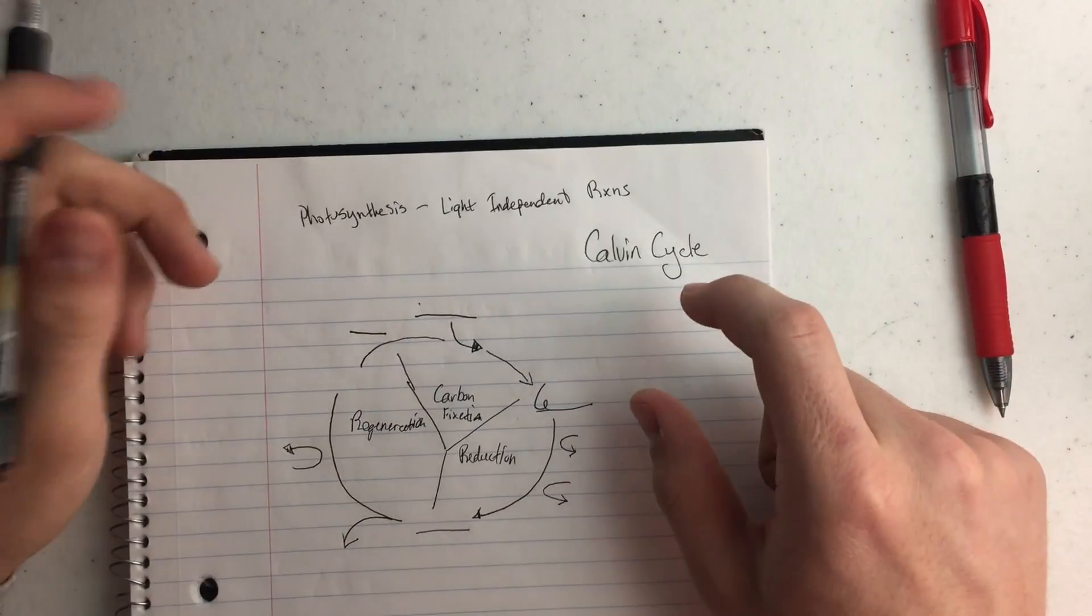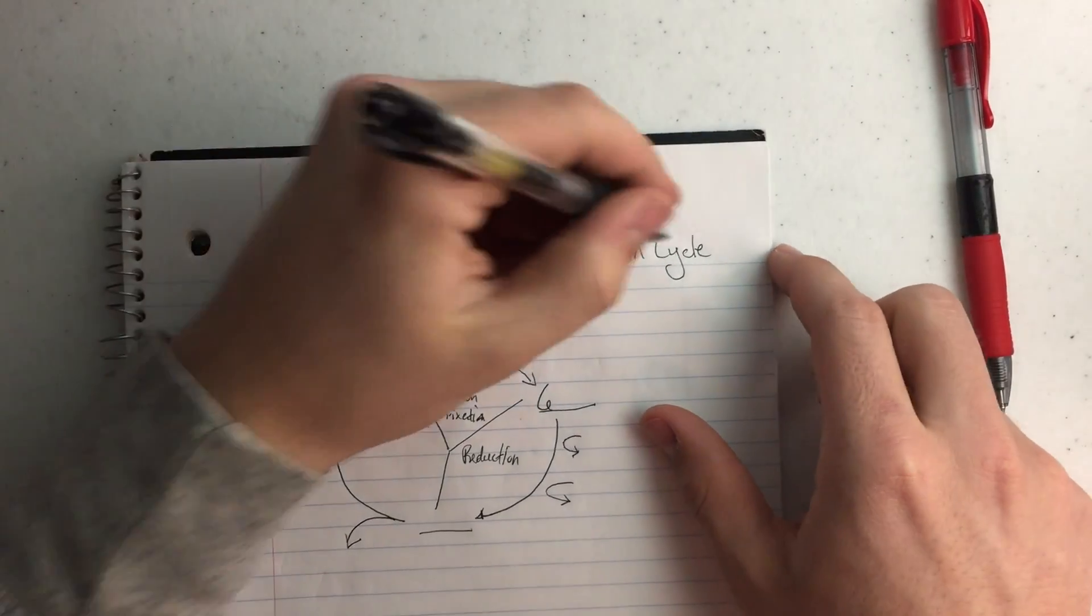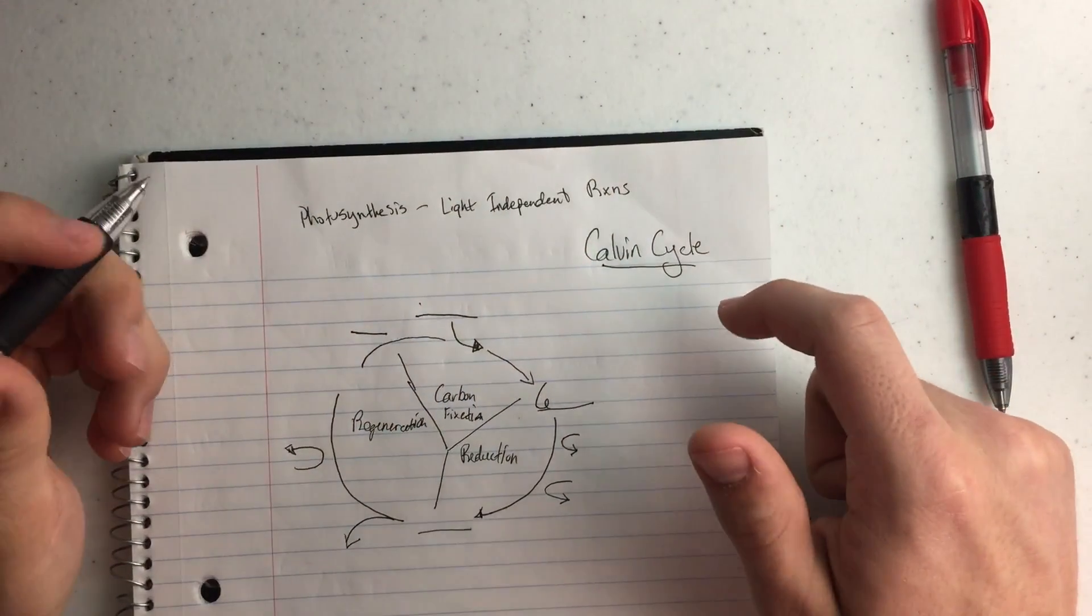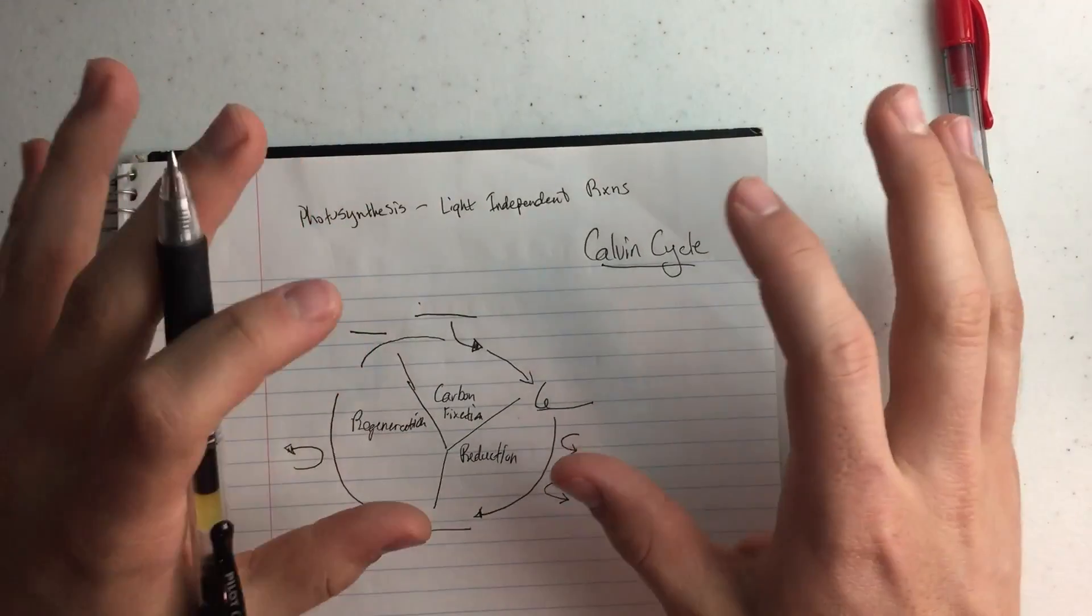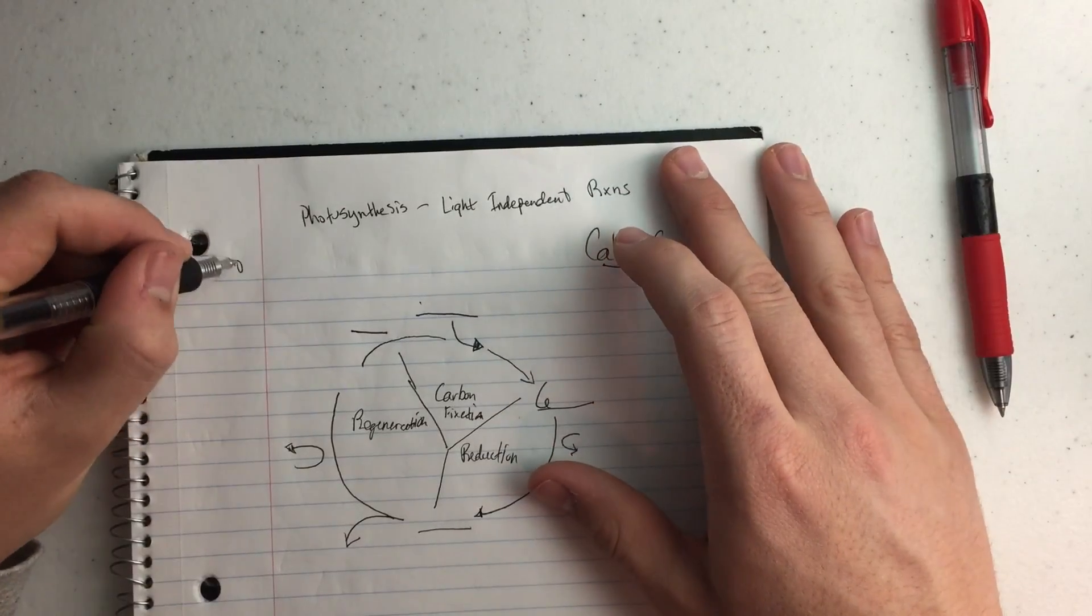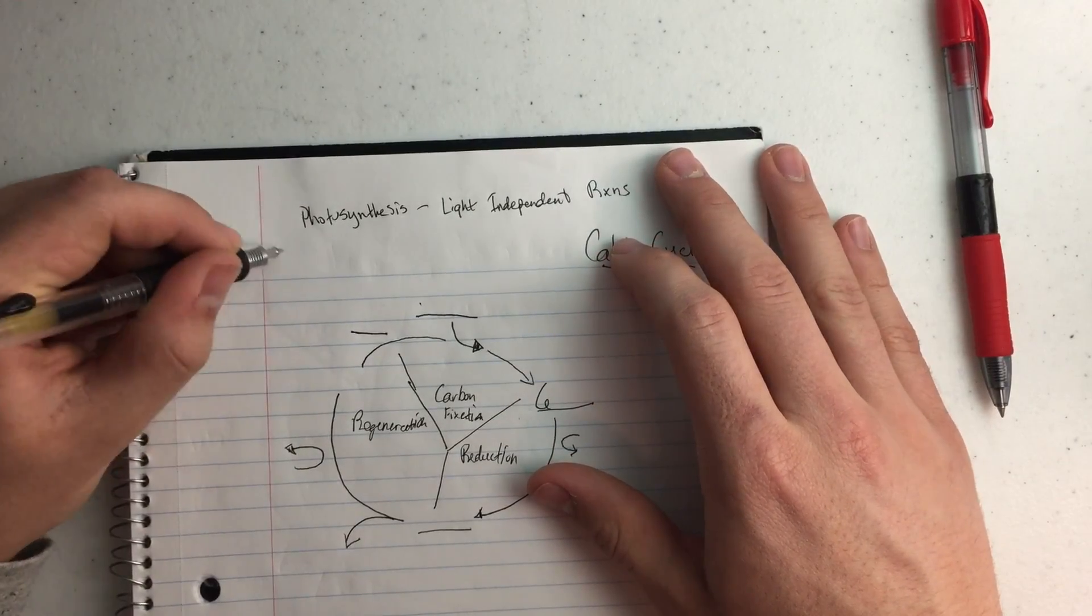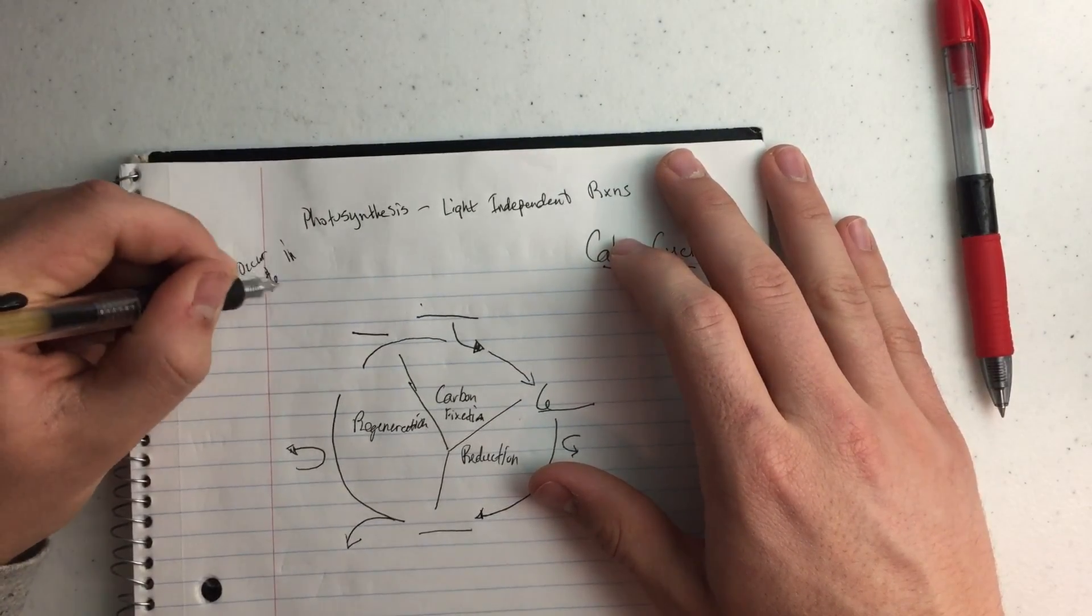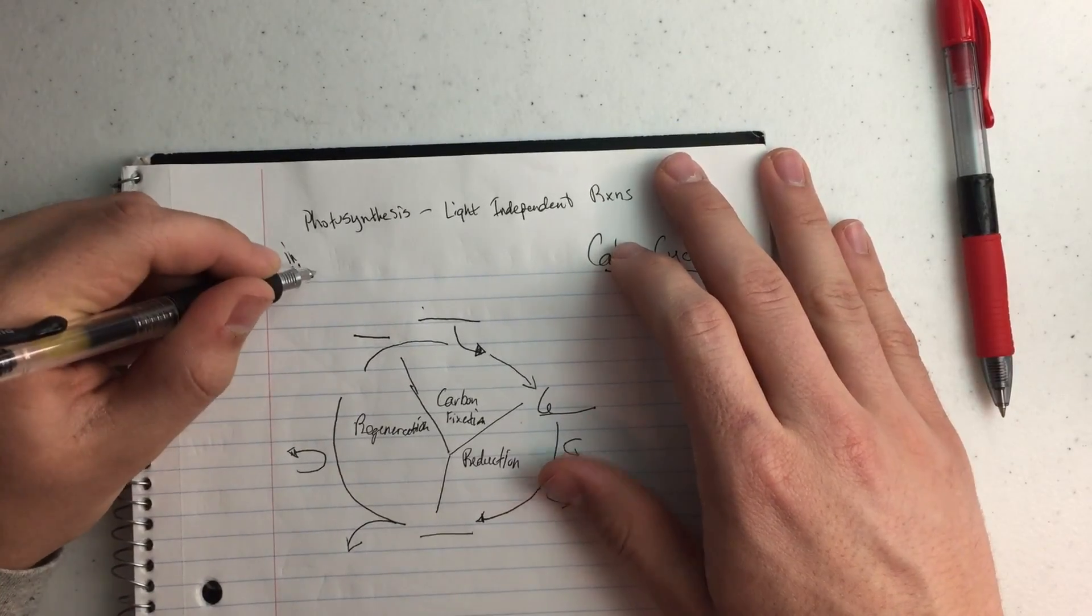Okie dokie, so today we're talking about photosynthesis and light independent reactions, also known as the Calvin Cycle. This is the half of the reactions in photosynthesis that doesn't require light to happen. This is going to occur in the stroma of the chloroplast.